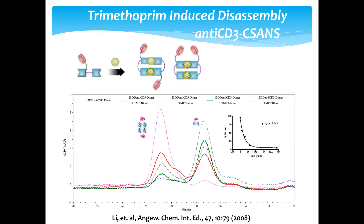Here you can see the nanorings that have been formed — in this case a dimeric one. As we add more trimethoprim, the dimer goes away and the monomer increases, with a half-life tunable to whatever concentration of trimethoprim you use. This gives us chemical control over what's going on.